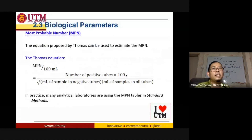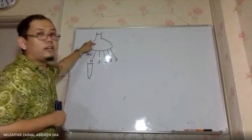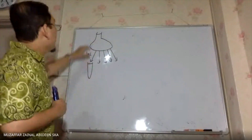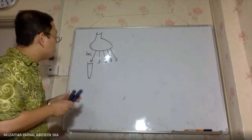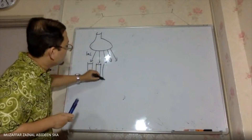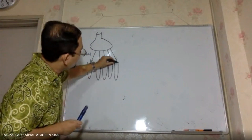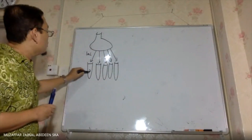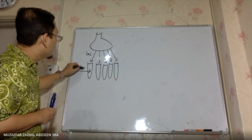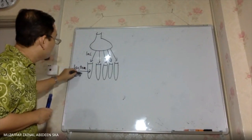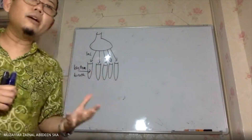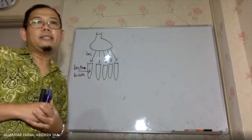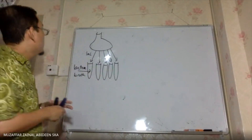Now we have the Most Probable Number. So this is a sample that you take from the river, and then from this sample you take 1 ml to be put in test tubes. This test tube contains lactose broth, which is a kind of material that provides food for the bacteria.